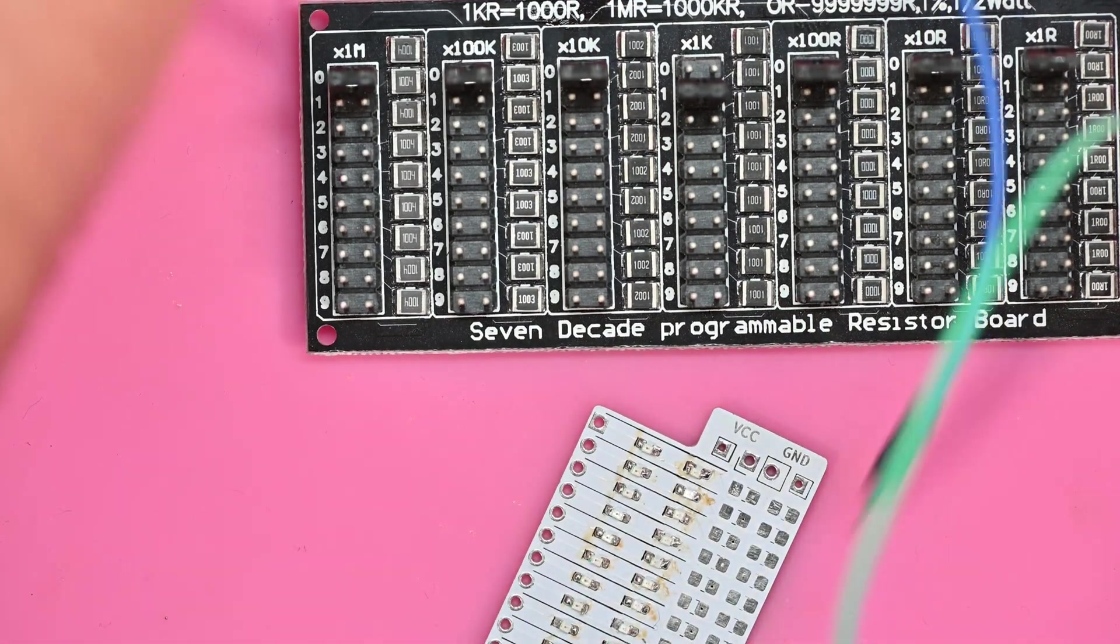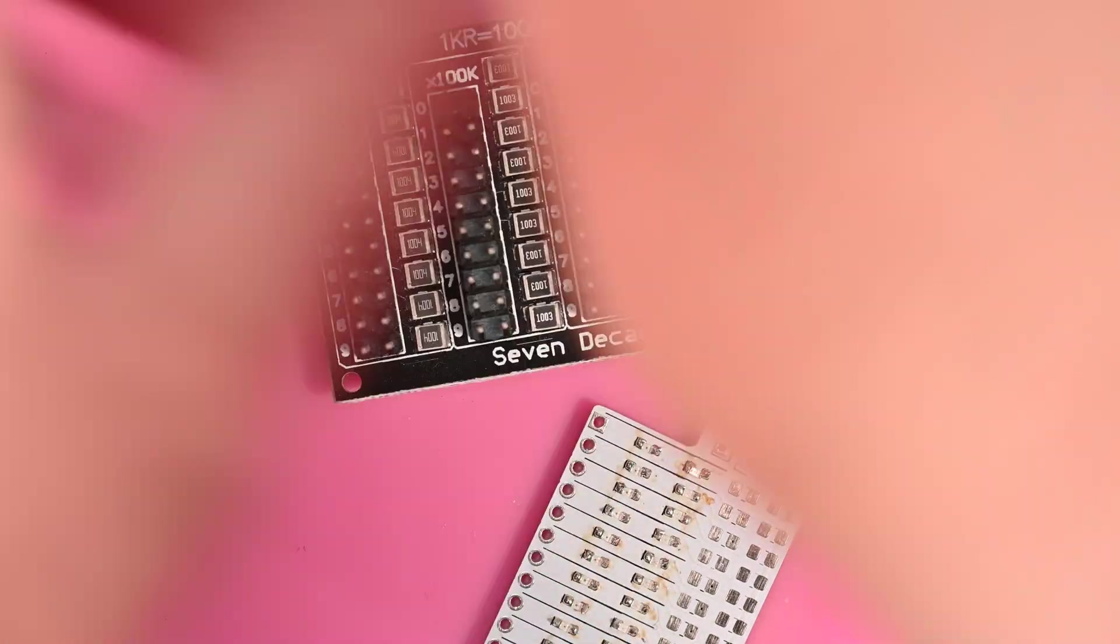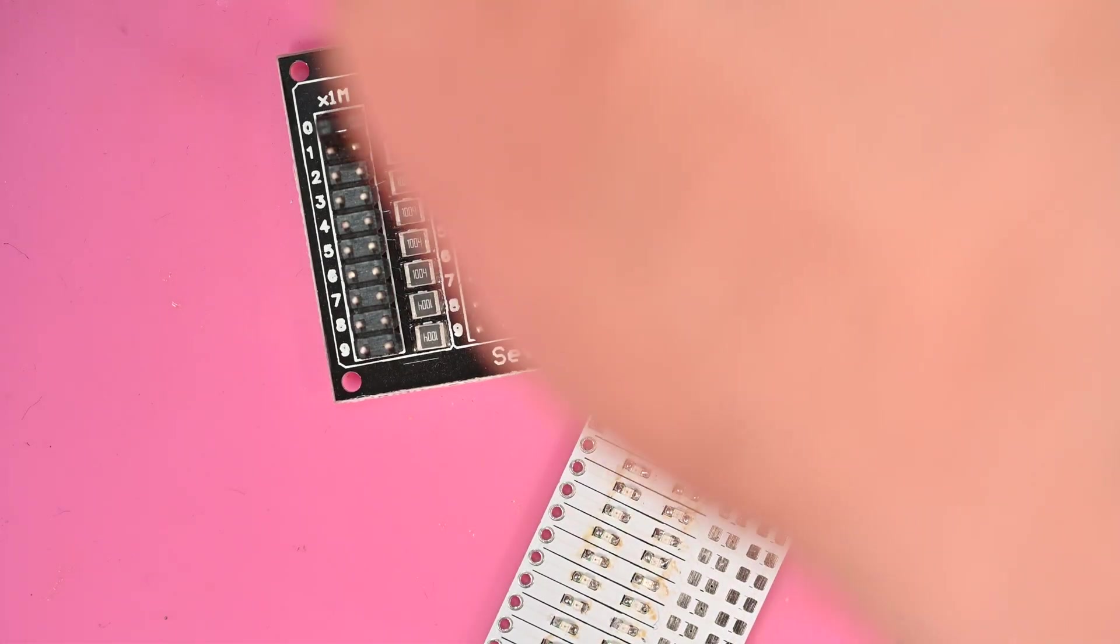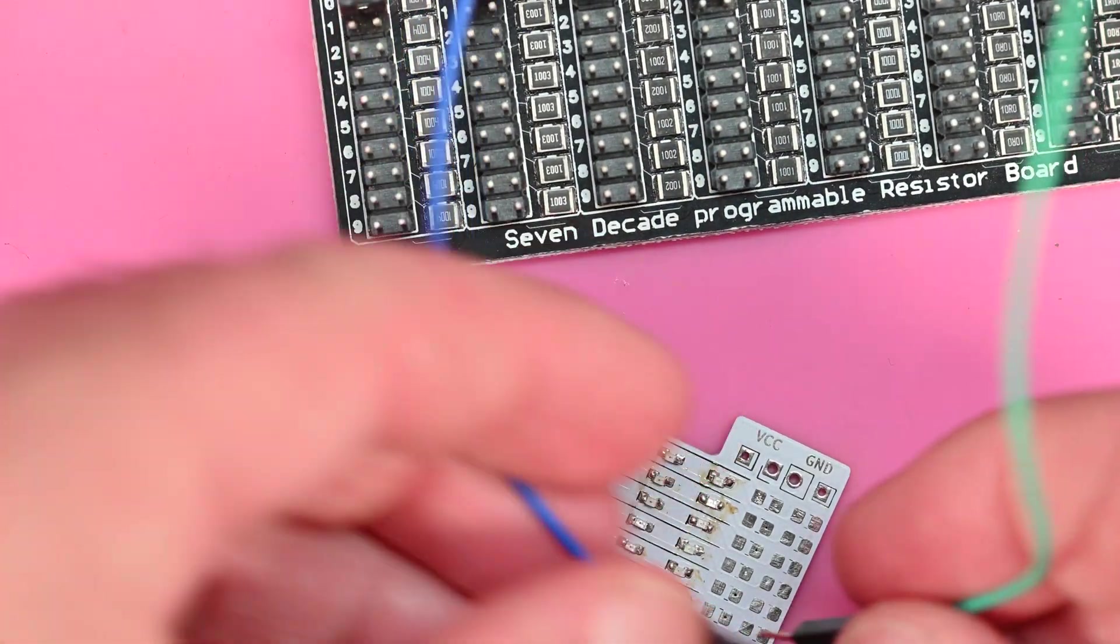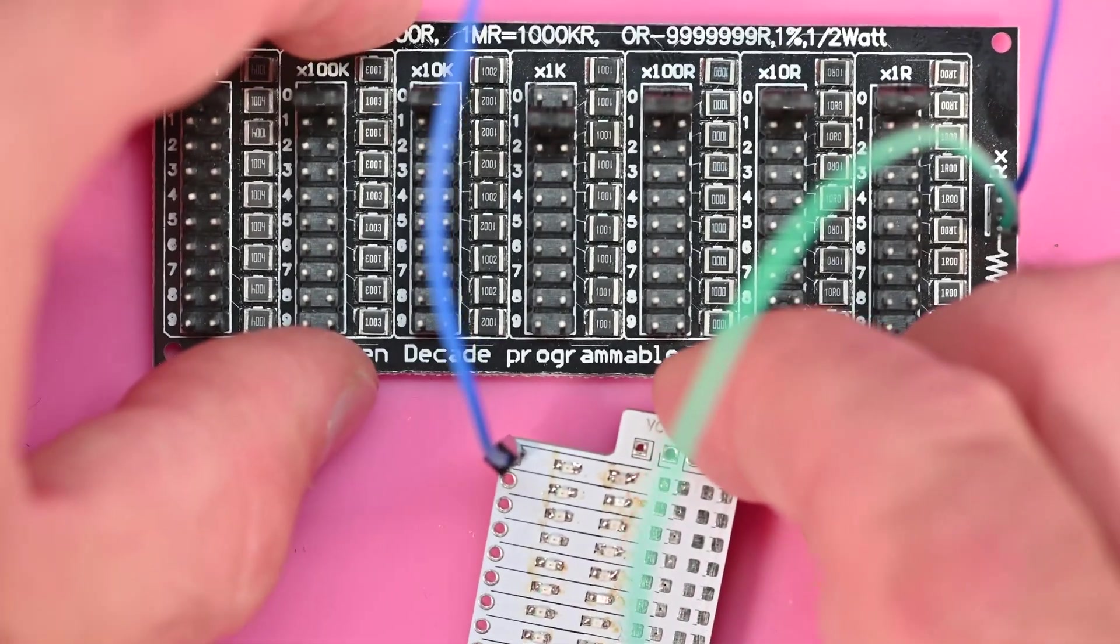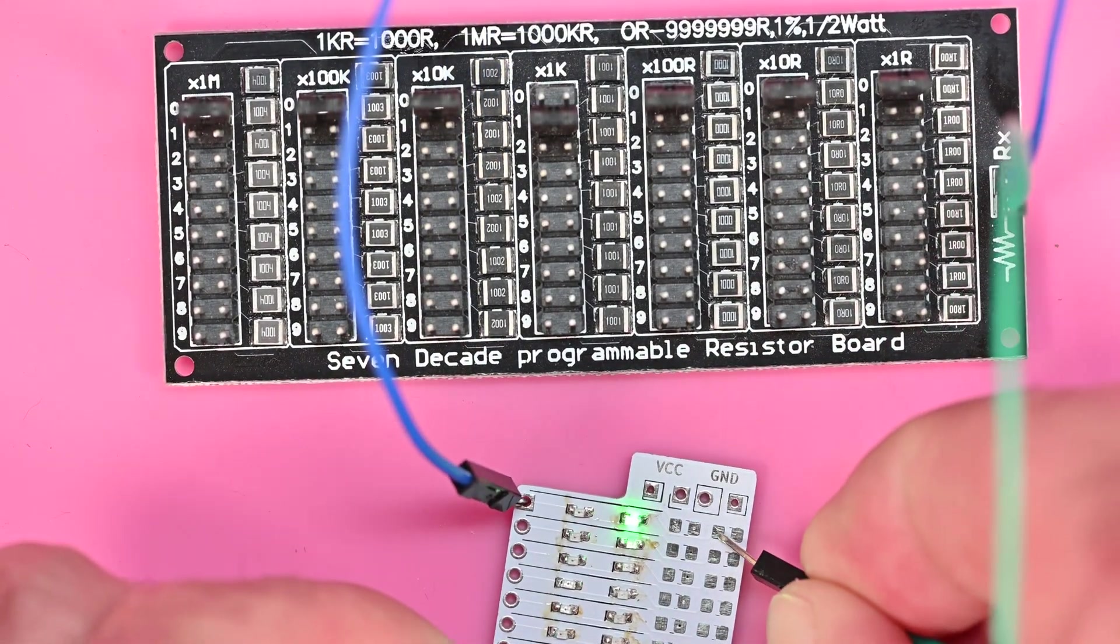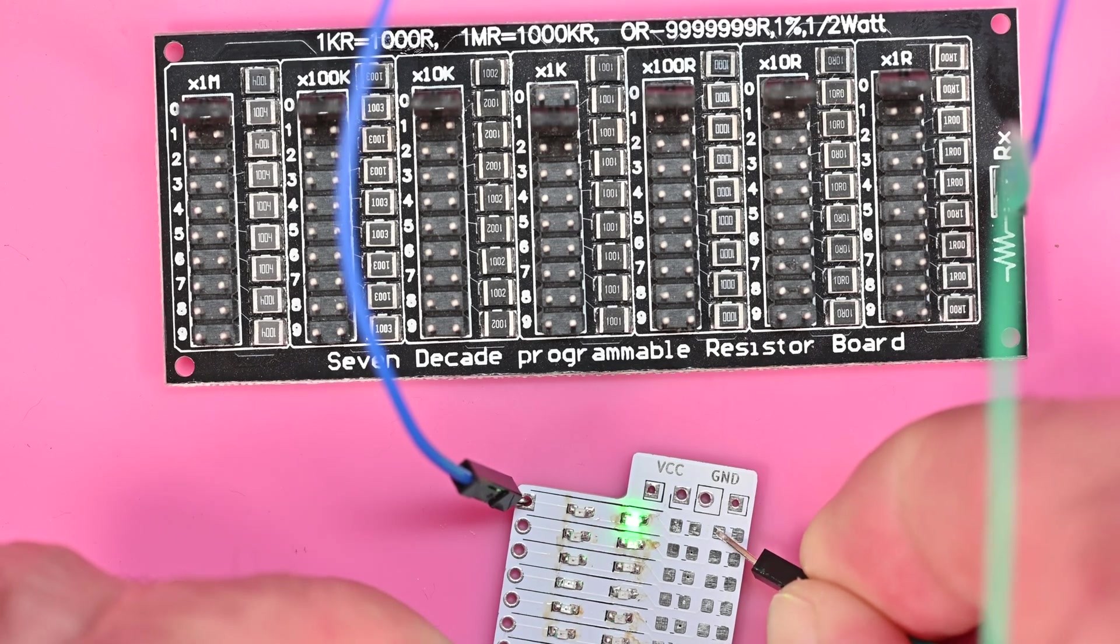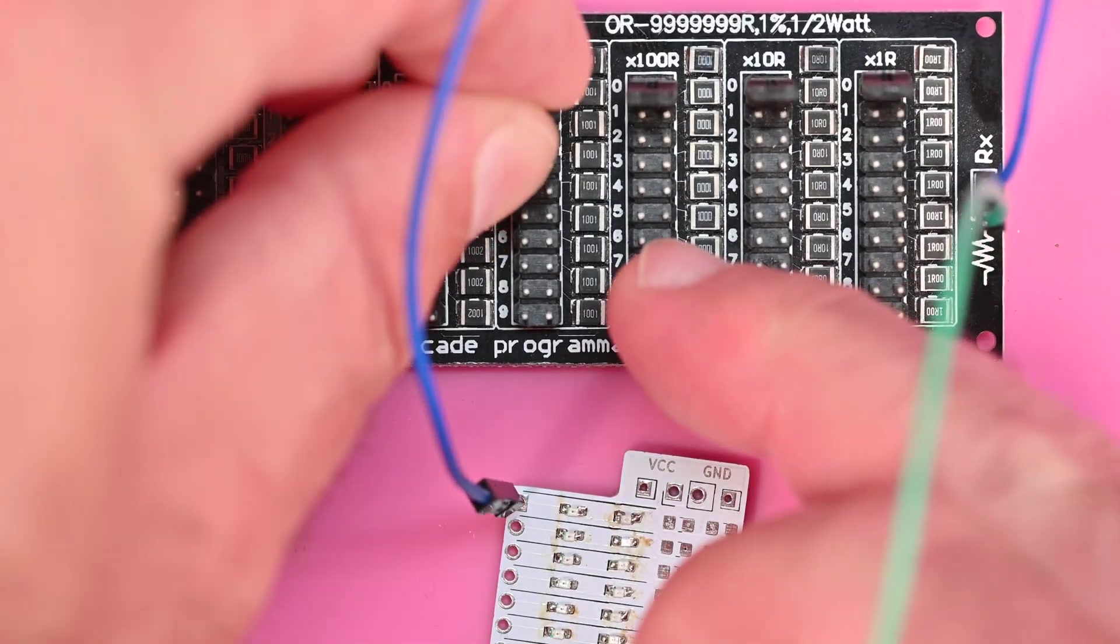So definitely for the reds I'm going to want 1k. And now to swap this over, you just swap the polarity of your leads. So now the resistor box is on the negative and then I will go into here.